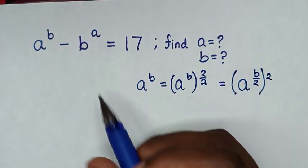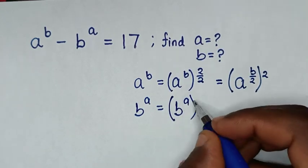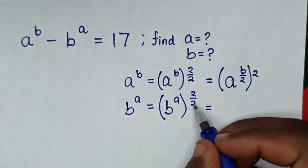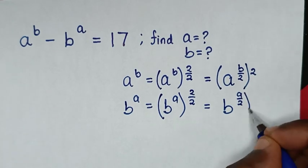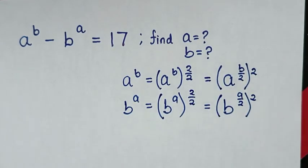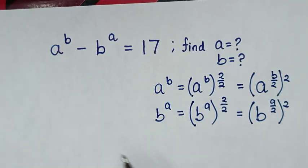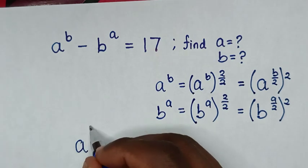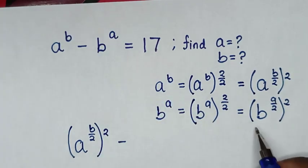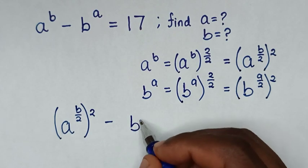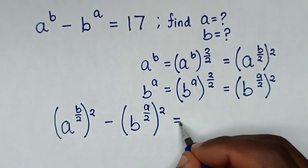Similarly, b power of a is equal to b power of a, bracket power of 2 over 2. We take the denominator of 2 inside the bracket, so it becomes b power of a over 2, bracket power of 2. We substitute both expressions into the original equation, giving us a power of b over 2, bracket power of 2, minus b power of a over 2, bracket power of 2, is equal to 17.